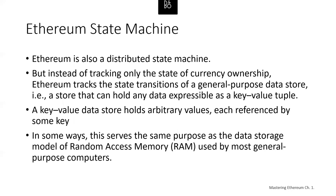A key-value data store holds arbitrary values, each referenced by some key. For example, the value of Ether can be referenced by the title 'currency.' In some ways this serves the same purpose as random access memory (RAM) used by most general purpose computers. Ethereum has memory that stores both code and data, and it uses the Ethereum blockchain to track how this memory changes over time, like a general purpose stored program computer. Ethereum can load code into a state machine and run that code, storing the resulting state changes in its blockchain.